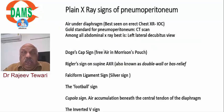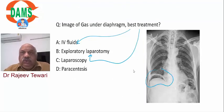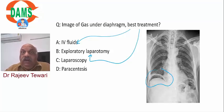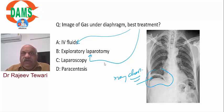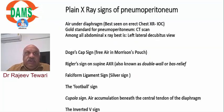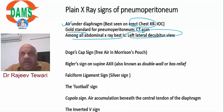Additional MCQs on pneumoperitoneum: the gold standard investigation is CT scan. The X-ray you order to see air below the diaphragm is chest X-ray erect view, not X-ray abdomen. Among all X-rays, the best view is the left lateral decubitus view. So: air under diaphragm is seen on chest X-ray; gold standard is CT; and among X-rays, best is left lateral decubitus.